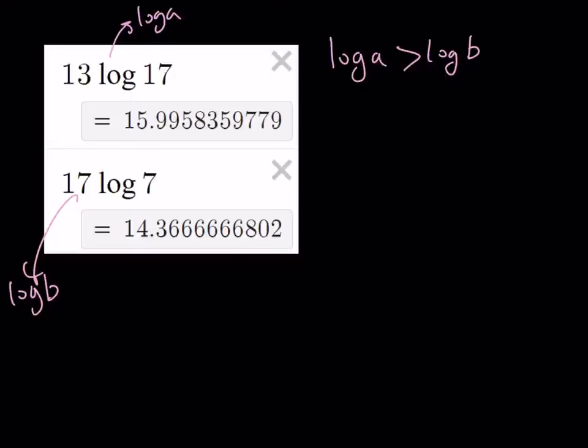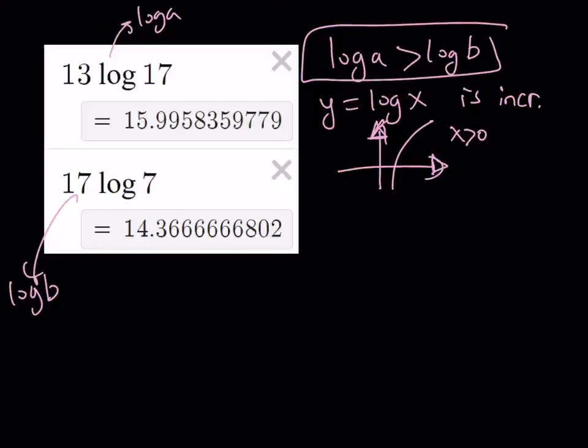That is true. A is greater than b because a log function y equals log x is increasing all the time. It's like the natural log - it has an x intercept, no y intercept, and an asymptote. It's always increasing, only defined for x greater than zero. This function is increasing, therefore a is greater than b. And a is 17 to the power 13, so this is our larger number.